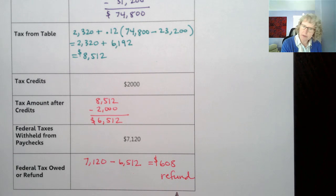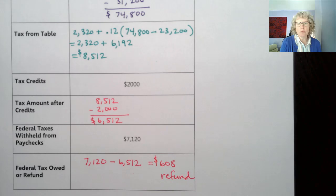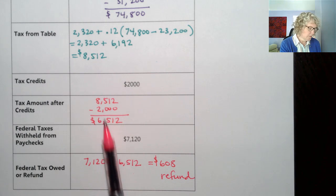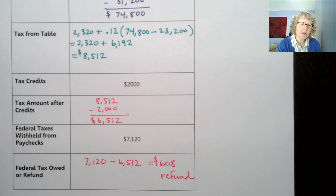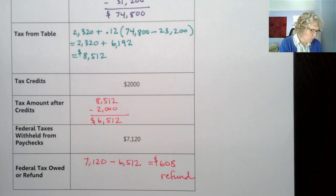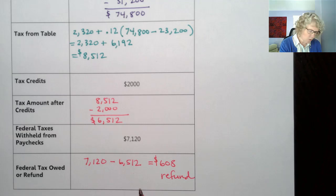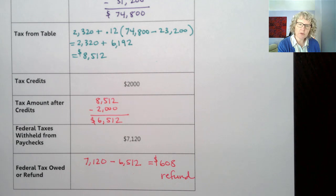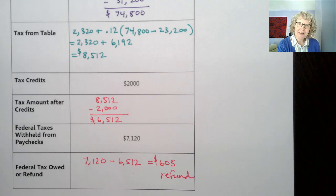The reason it's nice to set it up this way is that a positive result comes out as a refund and a negative as what you owe — but either way you can also figure it out intuitively. So that is an example of going through the whole process for this family. Thanks for watching — I'll see you in the next video.